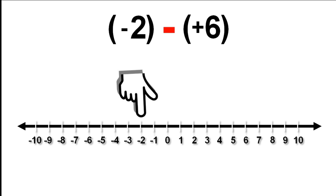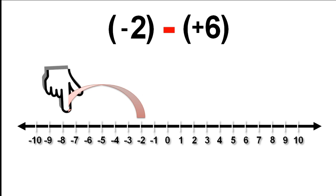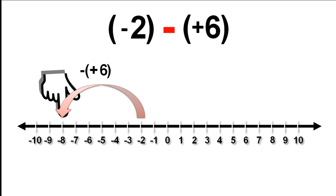Next, we look at the operation symbol. We are subtracting. Then we look at what we are subtracting. Here we can see we are subtracting a positive number. The brackets help to make things clear. We know that when we subtract a positive number,